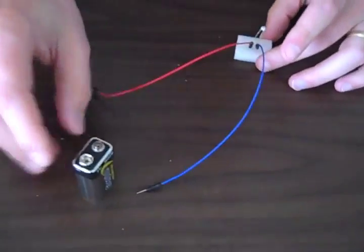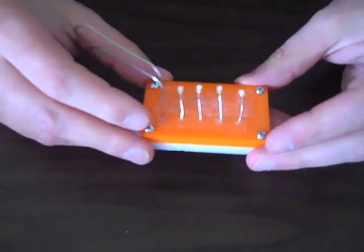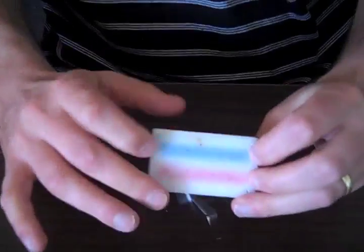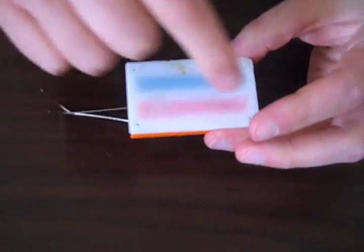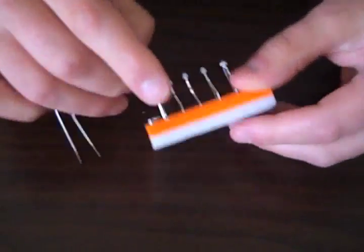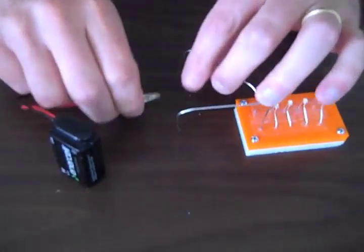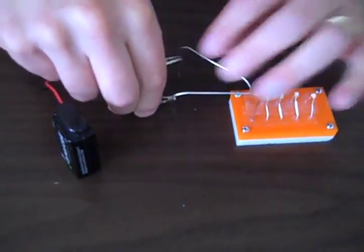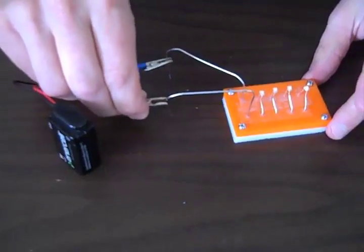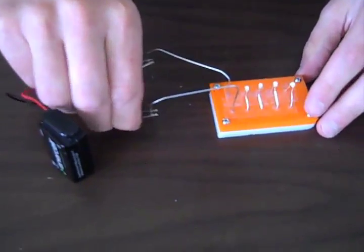Once you've mastered this, then you can start working with more complex circuits. This is an early version that's 3D printed, and you can see on the back, strip of Play-Doh, strip of Play-Doh. You can attach it, again use the same 9-volt battery, and create a parallel circuit of four LEDs.